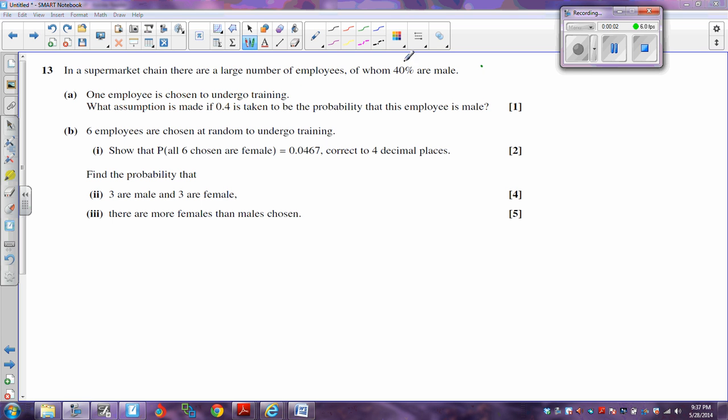The question is about a supermarket where 40% of the employees are male and they choose one employee to undergo training. It says what assumption is made if 0.4 is taken to be the probability of the employee being male? We have to assume here that every single member of the population, the employees in other words, has the same chance of being chosen, rather than perhaps only choosing from the butchers or something which are possibly all male. You have to assume that every single member of the supermarket has the same chance of being chosen, in which case there is a random possibility of 0.4 of the person being male.